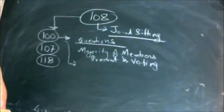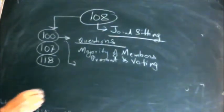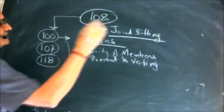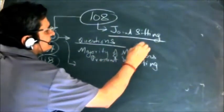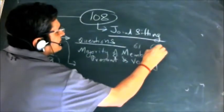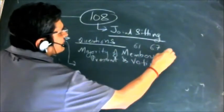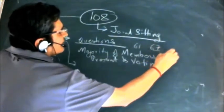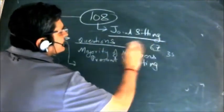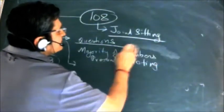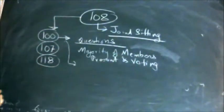Article 100 makes a mention of either house or joint sitting. It says that all questions, save as otherwise provided - and otherwise are those as we covered in Article 61 for impeachment, 67 for the vice president, likewise we have for state assembly speakers, and we have 352, 249. There are various articles which deal with other kinds of majority. We'll deal separately with those.